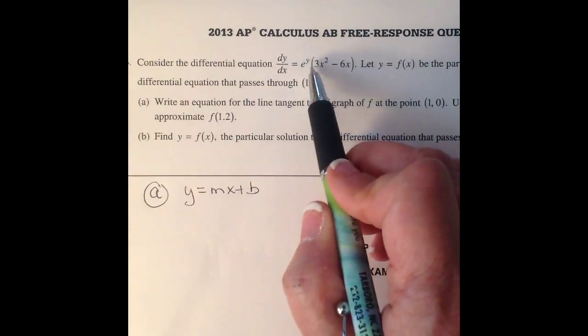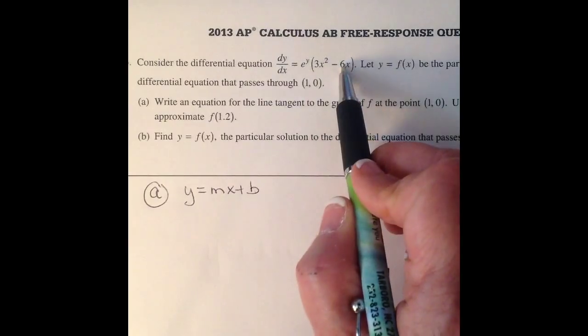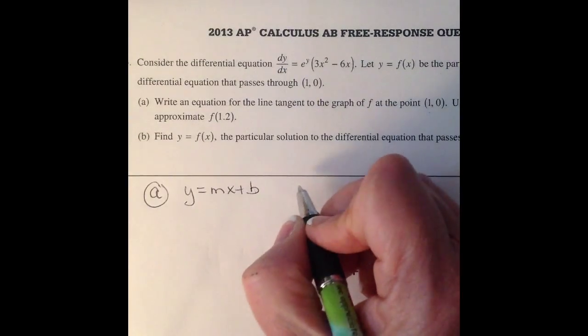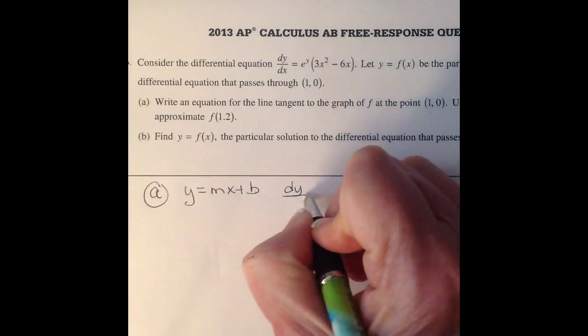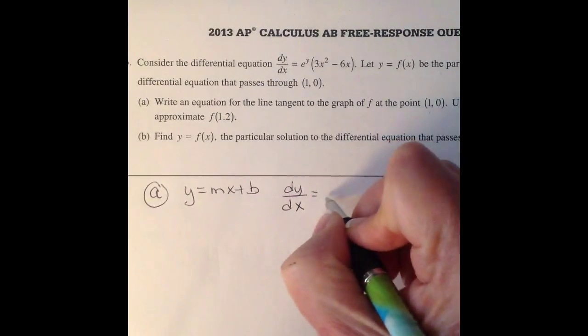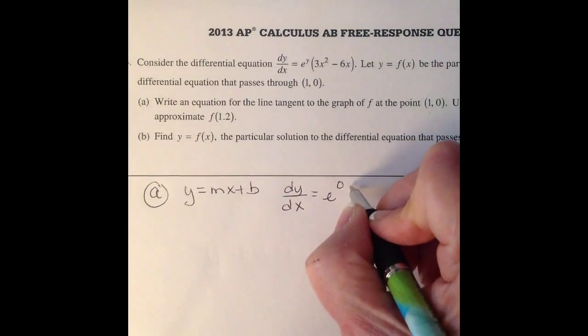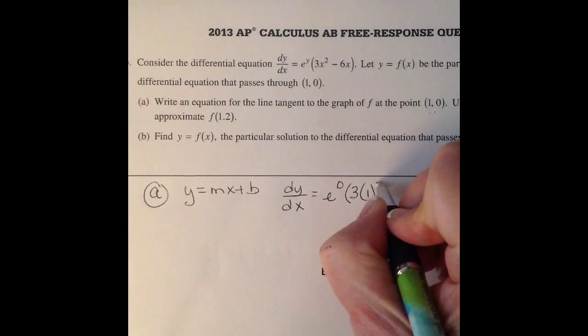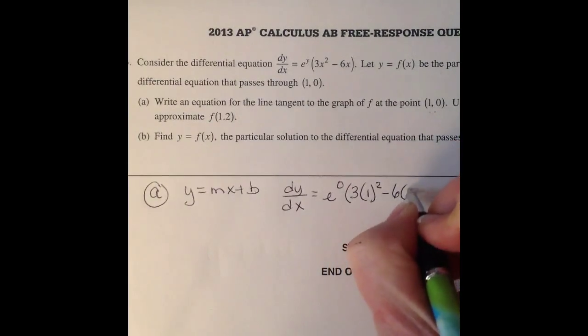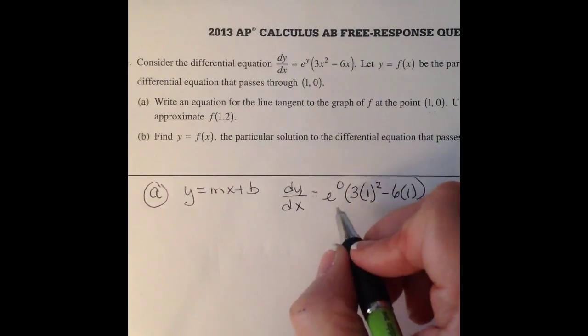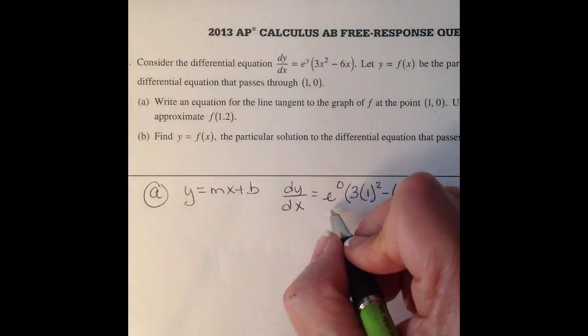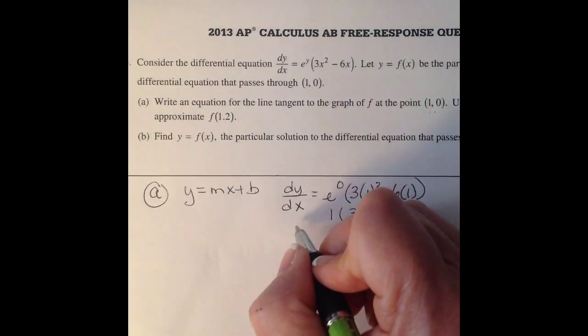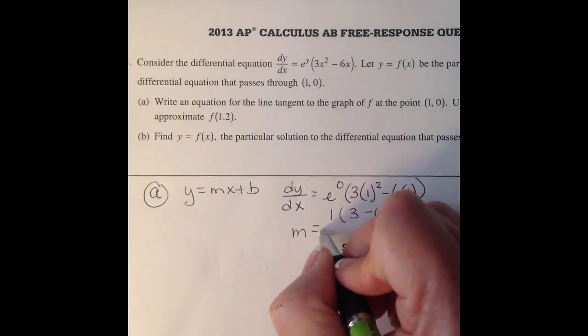Well we've got the general slope formula because slope is your derivative. So we've got this here and we've got the point (1,0). So we're going to come over here and plug in to get our numeric slope. And so we're going to say e^0 because that's what our y value is, times 3(1²) - 6(1). And so e^0 is going to be 1, and this is going to be 3 - 6. So our slope is going to be -3.